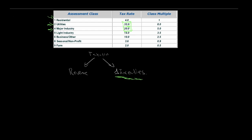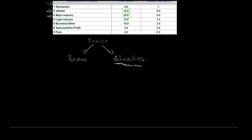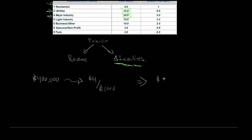Let's take a brief example. Say your house is valued at $400,000, taxed at $4 per $1,000 of value. We do $400,000 divided by $1,000 to get 400 thousands, then multiply by four — giving us $1,600 in property tax to the city.